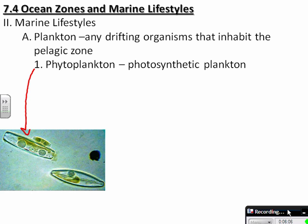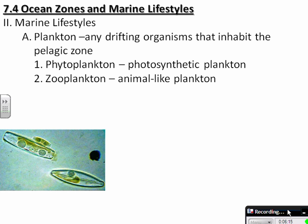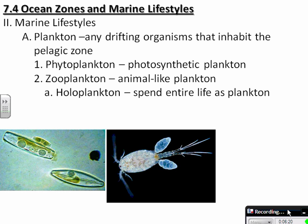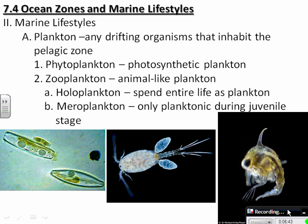Zooplankton include animals like the copepod pictured here. This copepod is holoplankton — 'holo' meaning entire — so it spends its entire life as a drifter and will never become benthic or a strong swimmer. That's different from crab larvae, which are meroplankton — 'mero' meaning in part — because only the juvenile stage is planktonic. Eventually the crab larvae will settle on the bottom and become a crab living on the sea floor.